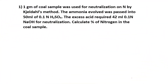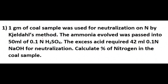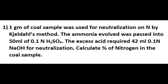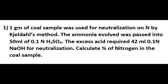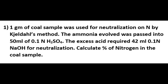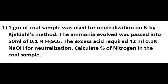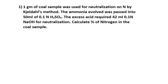The first numerical is related to the calculation of percentage of nitrogen present in a coal sample. We use Zelda's method for estimation of percentage of nitrogen. The numerical is: 1 gram of coal sample was used for estimation of nitrogen by Zelda's method. The ammonia evolved was passed into 50 ml of 0.1 normal H₂SO₄ solution. The excess acid required 42 ml of 0.1 normal NaOH for neutralization. Calculate the percentage of nitrogen in the coal sample.